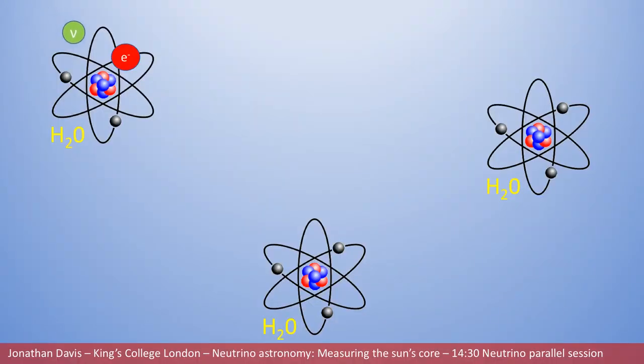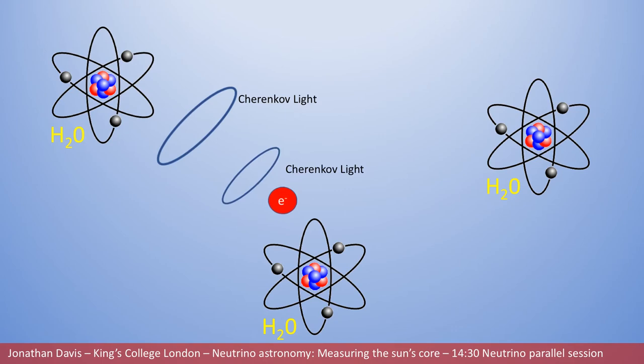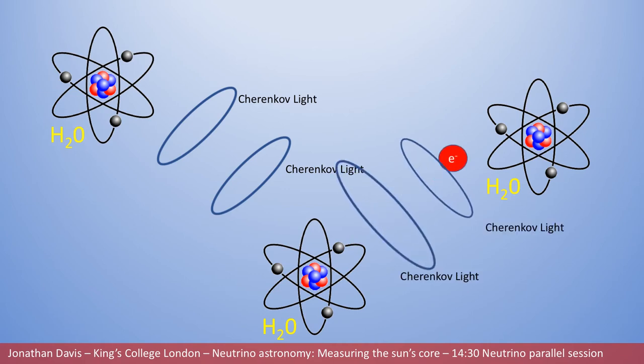In experiments like Super-Kamiokande, the neutrinos are detected through scattering of electrons. Understanding how the electrons travel through the water is crucial to reconstructing the neutrino directions, and thereby imaging the Sun's core.